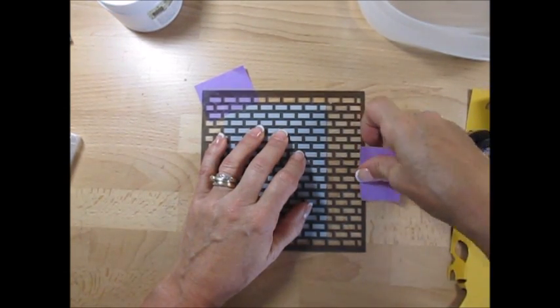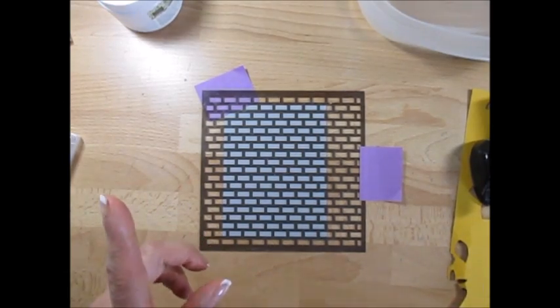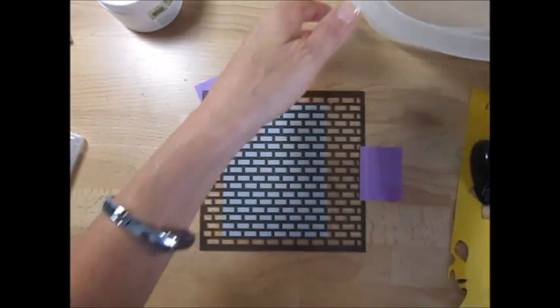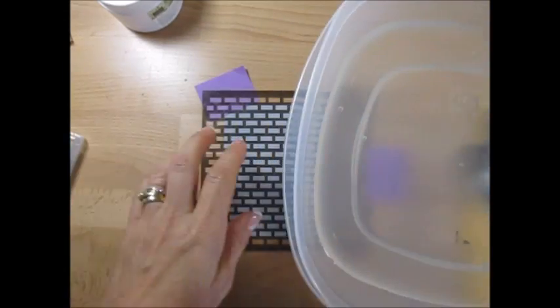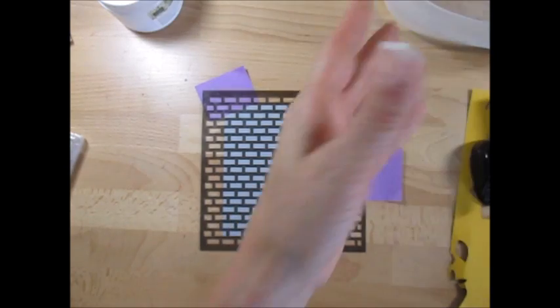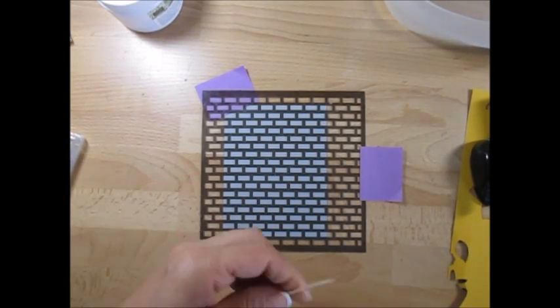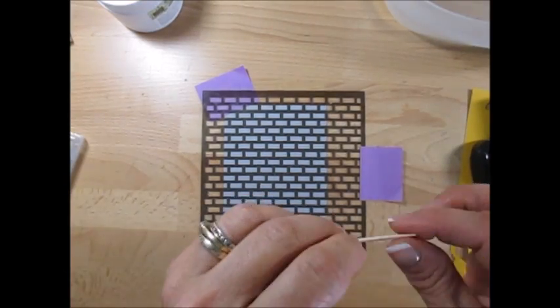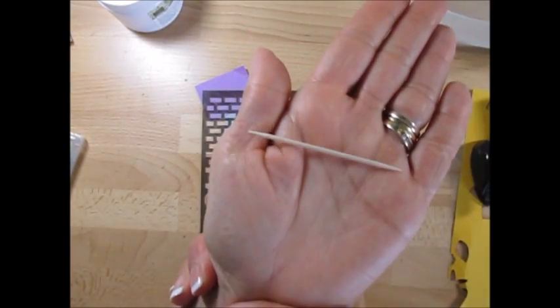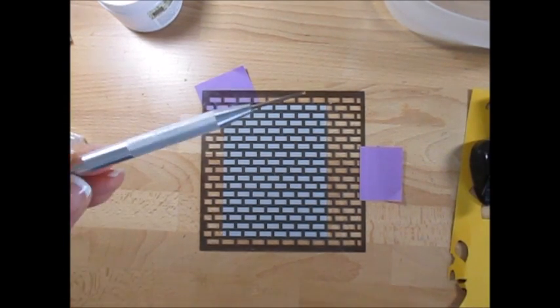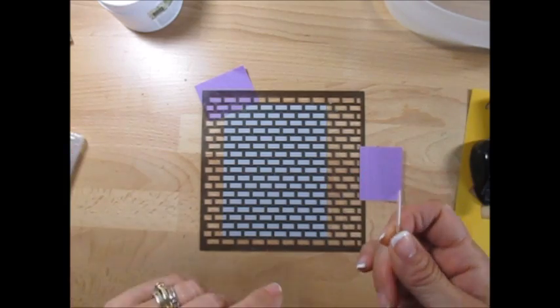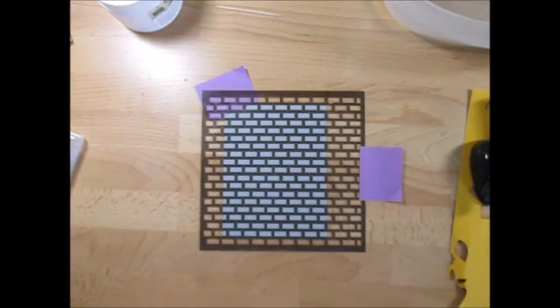There's no right and wrong. One thing I suggest is that you get a container with water by you so when you're done you can toss your tools in there so it won't get hard and hard to wash. Or you can go to the sink and rinse it right away. One more tool you're going to need that you can find in your kitchen is a toothpick. You can use the paper piercer but I like a toothpick better.